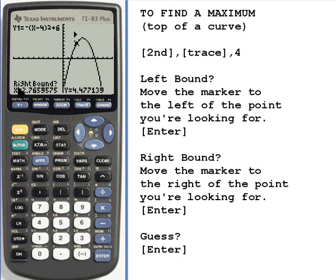And now it's asking me for the right bound. So I'll use the right key to move over to the right of the point I'm looking for. I'll press enter again. Here you can see these two little arrows to the left and right of the point I want, showing me that that's where the calculator is going to look. Now the calculator says guess. Well, when it says guess, we just press enter again.